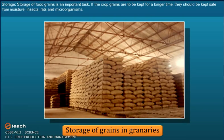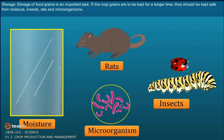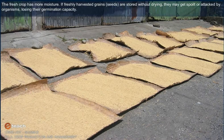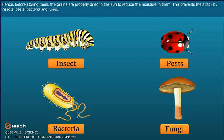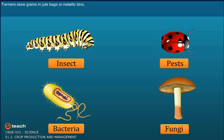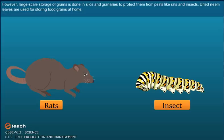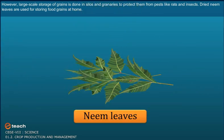Storage. Storage of food grains is an important task. If the crop grains are to be kept for a longer time, they should be safe from moisture, insects, rats and microorganisms. The fresh crop has more moisture. If freshly harvested grain seeds are stored without drying, they may get spoiled or attacked by organisms, losing their germination capacity. Hence, before storing them, the grains are properly dried in the sun to reduce the moisture in them. This prevents attack by insects, pests, bacteria and fungi. Farmers store grain in jute bags or metallic bins. Large-scale storage of grains is done in silos and granaries to protect them from pests like rats and insects. Dried neem leaves are used for storing food grains at home.